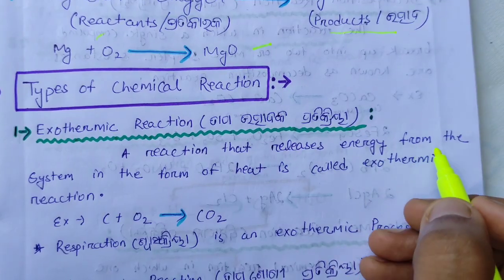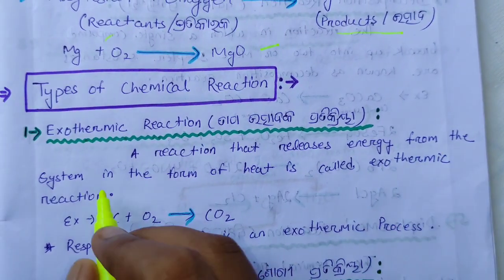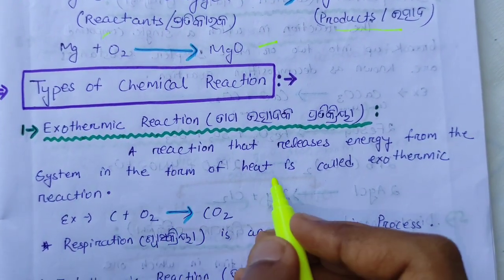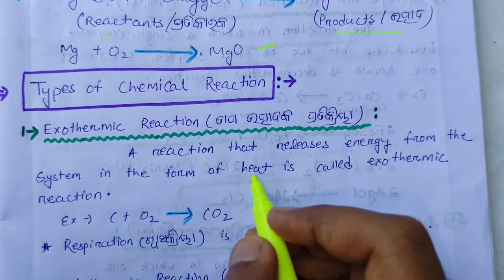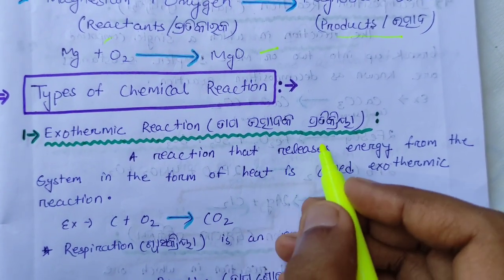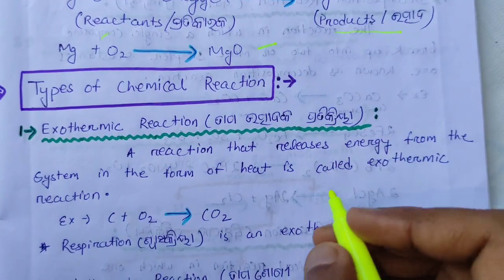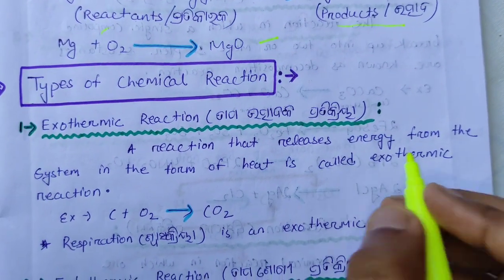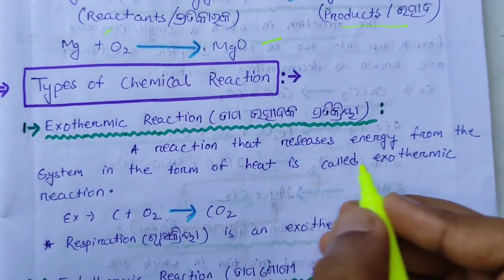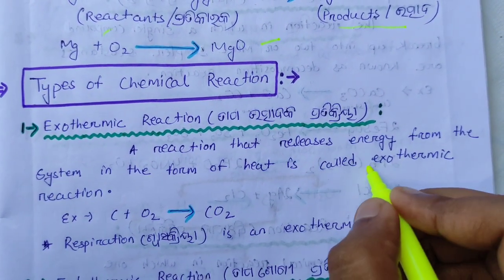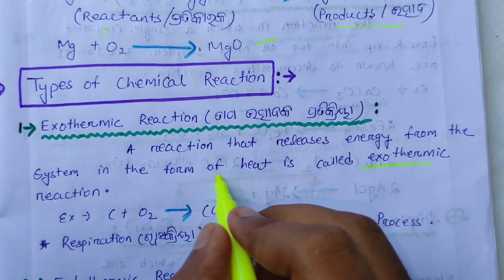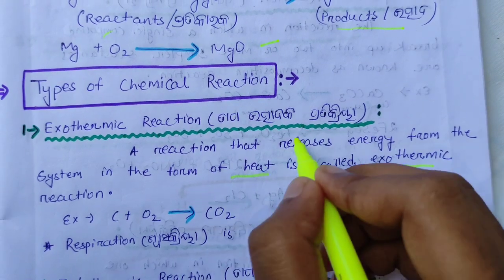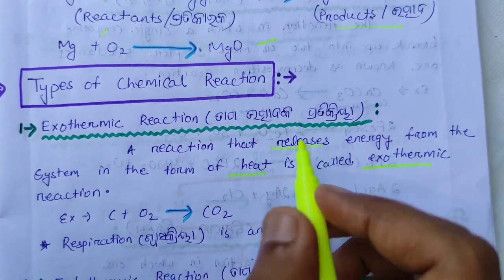When energy is released from the system in the form of heat, it is called an exothermic reaction. Heat is released.